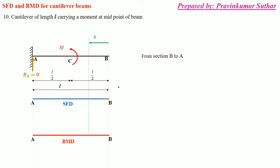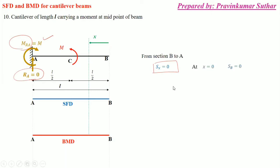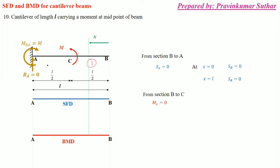As there are no vertical forces and this is a pure moment, the vertical reaction RA is equal to zero and the resisting moment equals M. There is no shear force throughout the entire length, so the shear force is zero. We calculate the bending moment section by section: section B to C, and section C to A. In section B to C, as we move from B to C and there is no load between them, the bending moment Mx equals zero at any point.